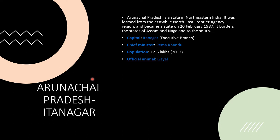Next one is Arunachal Pradesh and its capital is Itanagar. Arunachal Pradesh is a state in northeastern India. It was formed from the erstwhile Northeast Frontier Agency region and became a state on 20th February 1987. It borders the states of Assam and Nagaland to the south. Capital is Itanagar. Chief Minister is Pema Kandu. Population is 12.6 lakhs from 2012 and the official animal is Gayal.